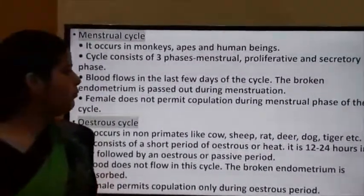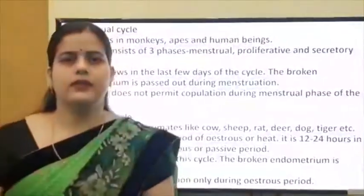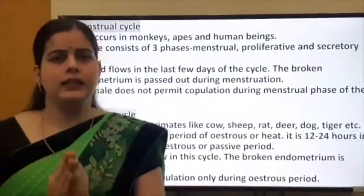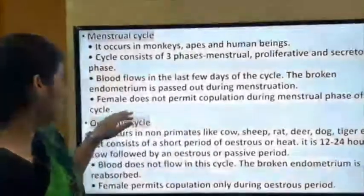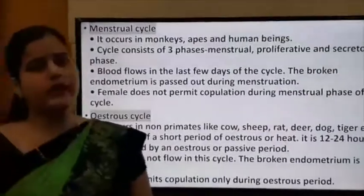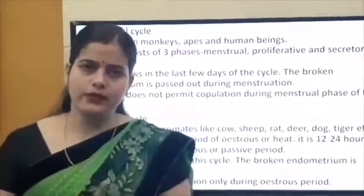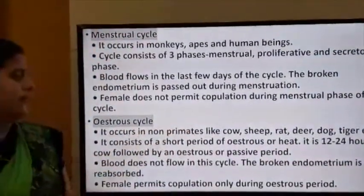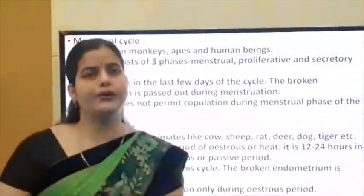In the menstrual cycle, the endometrium lining breaks down and blood passes out from the body during menstruation. During the menstrual phase, the female does not permit copulation. The oestrous cycle occurs in non-primate animals like cow, sheep, rat, deer, dog, and tiger.